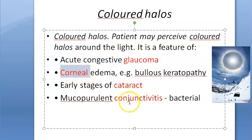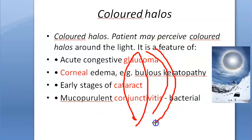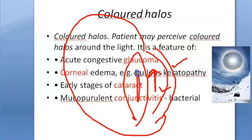The structures being implicated are the cornea, the lens, and the conjunctiva. Causes include mucopurulent conjunctivitis, corneal edema, and congestive glaucoma where the cornea is affected — all leading to colored halos.